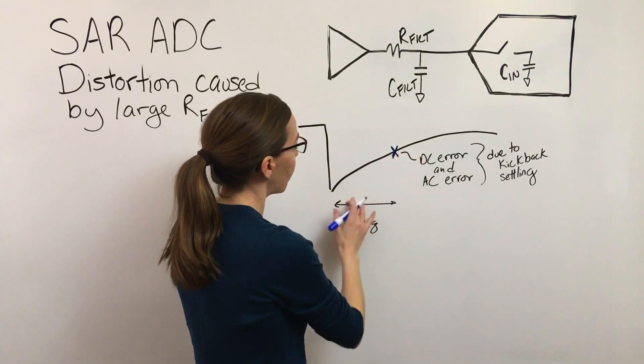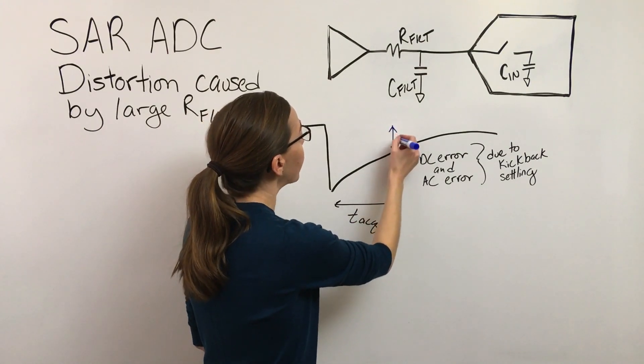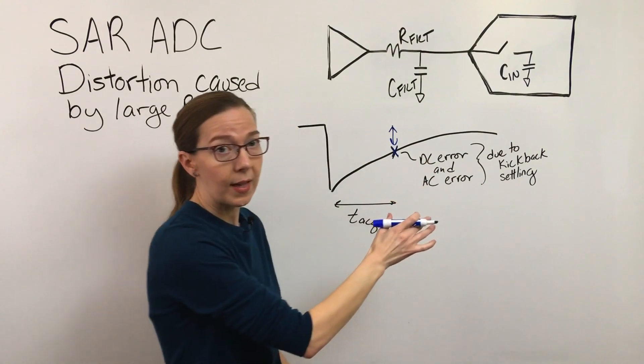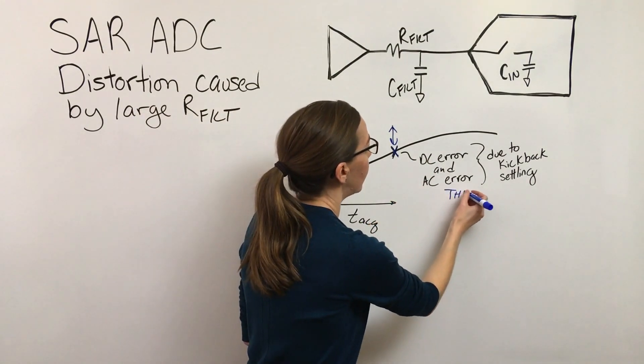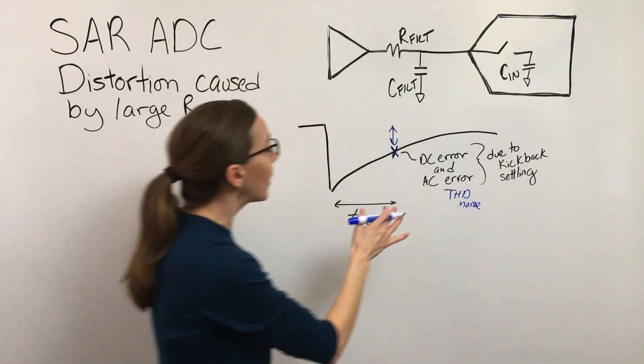An amount of this kickback that doesn't settle by the end of the acquisition cycle and this non-settling can lead to DC and AC errors. AC errors would be things like THD or distortion and noise.